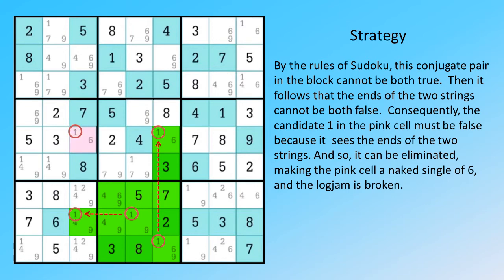because it sees the ends of the two strings. And so, it can be eliminated, making the pink cell the naked single of 6, and the logjam is broken.